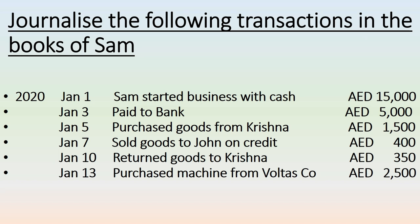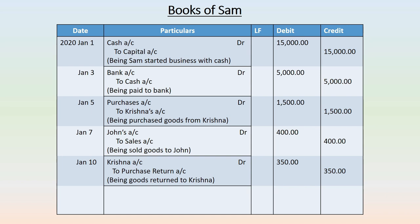Next transaction, January 10th: returned goods to Krishna. We had already purchased goods from Krishna, and maybe some goods were damaged or the supplier shipped the wrong item, so Sam returned the purchased goods. For purchase return, you can apply either nominal or real account rules. The two accounts are Krishna's account and purchase return account. Krishna's account is a personal account and is to be debited as he is the receiver of the returned goods. Purchase return is an income or asset account and should be credited as goods have gone out of the business. Write down the narration.